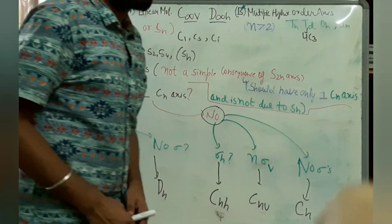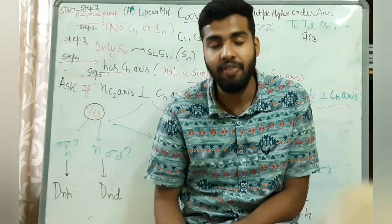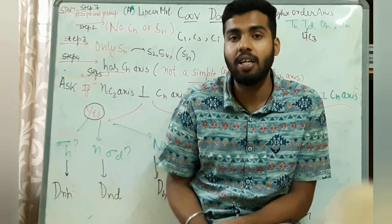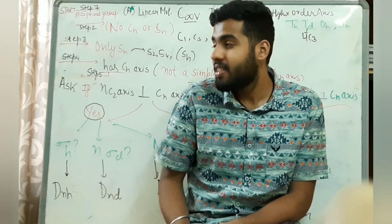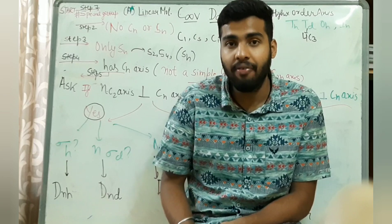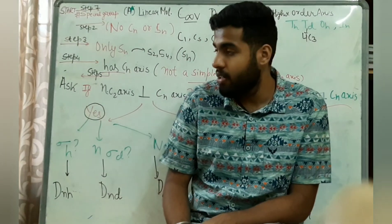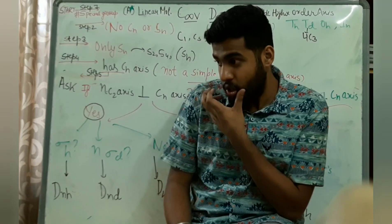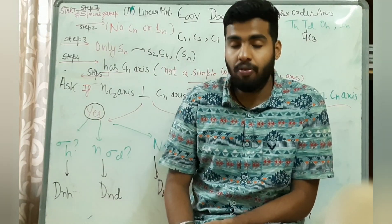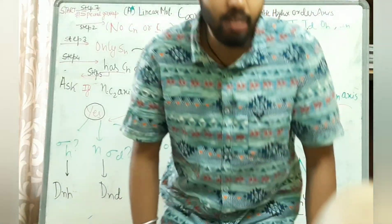If you look on the internet or YouTube, you'll find they draw a flow table that is actually very difficult to understand, but here I have drawn a table which is particularly very easy to understand. This reference table is taken from a book called F.A. Cotton, who is a pioneer in this field — a really good book you can follow. I'll go aside now so you can take a screenshot, then we'll proceed further.